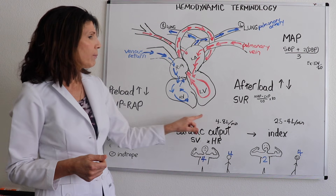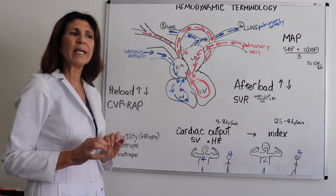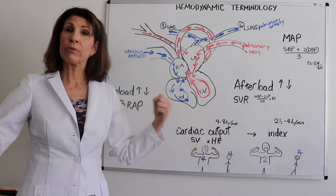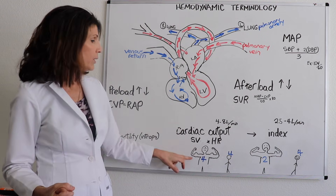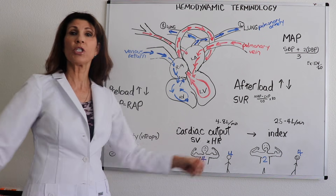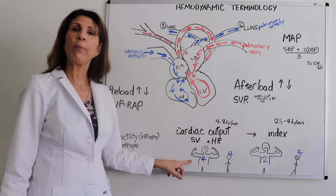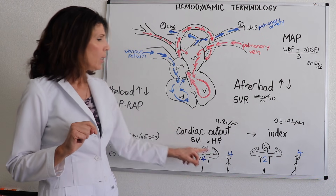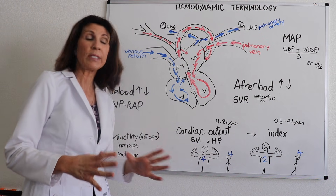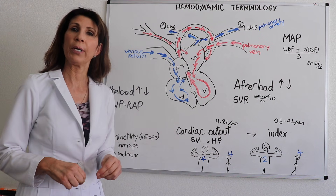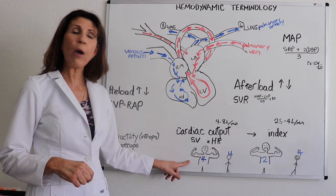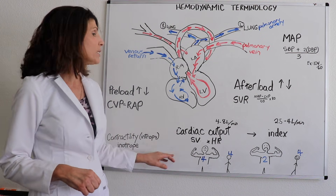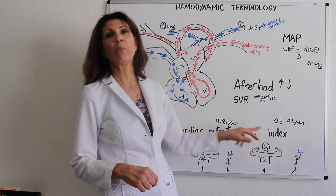Stroke volume is the amount of blood pumped with each systolic ejection, and multiplied by how many times that happens per minute — the heart rate — gives you cardiac output in liters per minute. However, that cardiac output number sometimes doesn't give us the whole picture. For example, if Arnold Schwarzenegger and Tom Cruise both have a cardiac output of four, who has the better cardiac output?